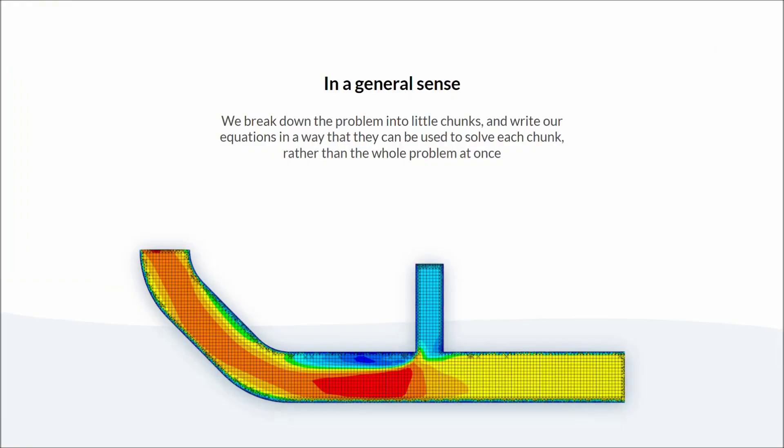So back to our original question, what is engineering simulation? In a general sense, it's breaking down a problem into little chunks, cubes in our case, and writing our laws of physics in a way that can be applied to each chunk. Then we let the computer solve these laws of physics in each chunk. This route of breaking down the problem into manageable chunks is much easier than trying to create one equation that can be applied to the entire system at once.